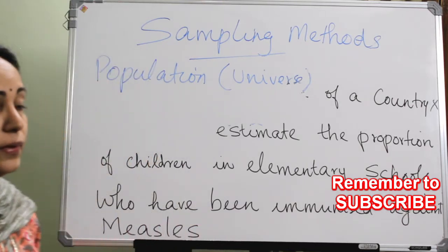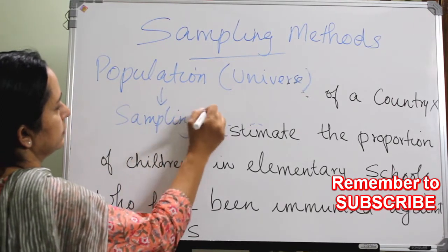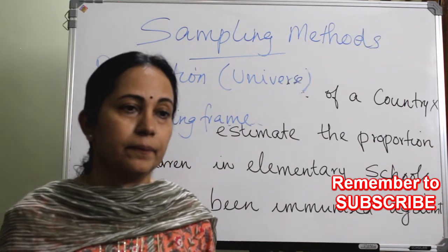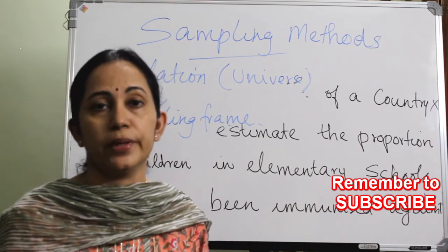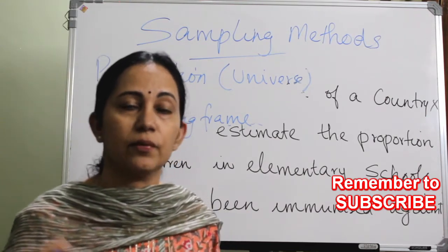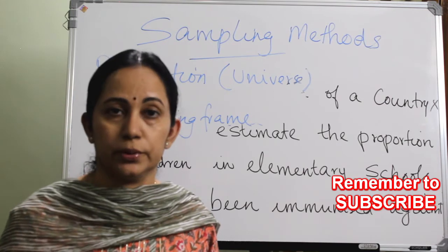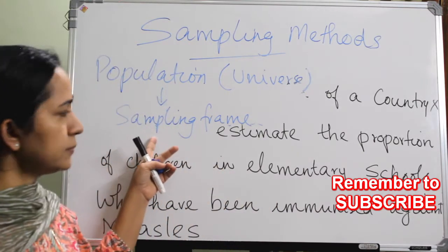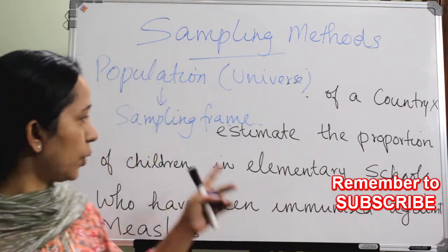From that, we will derive a sampling frame. What is a sampling frame? If it is in India, the whole children studying in elementary schools of India constitute the population. From that, we have to take the sampling frame. We take four states — one from the northeast, one from the west, one from the north, and one from the south. The list of all children in the elementary schools of these four states constitutes the sampling frame.